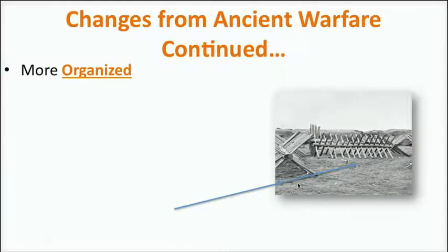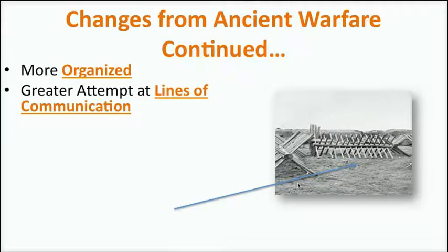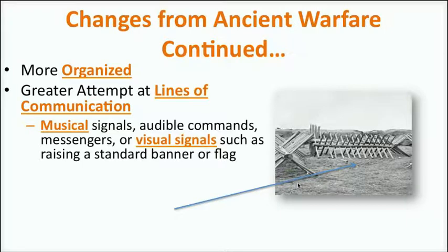Medieval warfare is more organized than ancient warfare — that's a big key. You're going to see large armies on the battlefield, but large didn't necessarily mean hundreds of thousands. A small group of knights, 5,000 or 10,000, could be a very formidable force. There were definitely greater attempts at lines of communication. You'd use signal fires, messengers, musical signals, audible commands, or visual signals such as raising a standard banner or flag. Armies marching into battle with banners or flags represented clan or tribal pride, but those banners could also serve as visual signals for many different things.